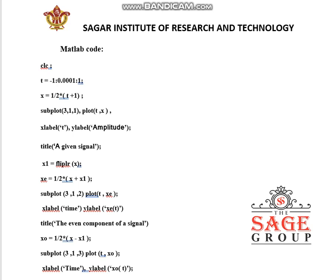The signal is accommodated in the first position, so 1 is used in the third argument. For plotting I use the command plot(t, x). The x-label is t and y-label is amplitude, with the title 'given signal'. For finding the folded version of the signal, the MATLAB command used is fliplr, so x1 is the folded version given by fliplr(x).